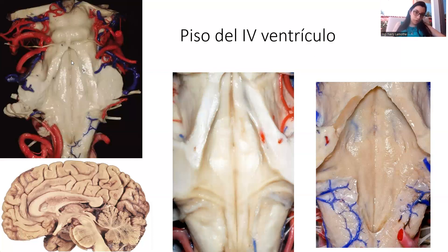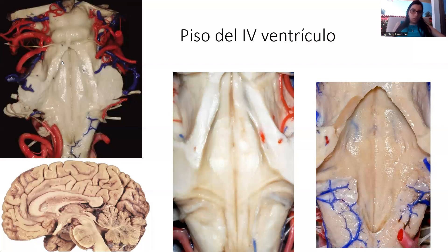To summarize the floor of the fourth ventricle: we have the pontine part, the bulbar part, and the junctional part. This is the medial eminence. These are the superior and inferior colliculi on both the right and left sides.